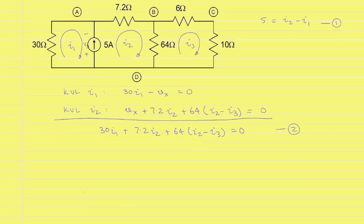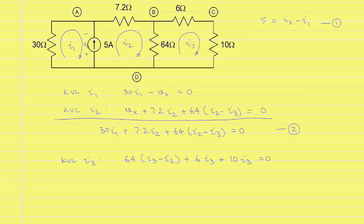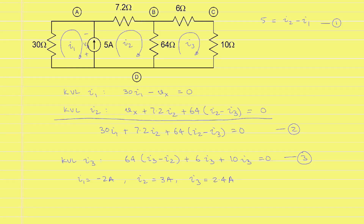This is the second equation that will be useful in mesh analysis. Writing KVL for the last mesh defined by the current I3, we will get a voltage drop of 64 multiplied by I3 minus I2 plus another voltage drop of 6 I3, and finally the last voltage drop of 10 I3 is equal to zero to satisfy KVL. This is the third equation. We have three equations and three unknowns. The solution will give us I1 is equal to minus 2 amperes, I2 is equal to 3 amperes, and I3 is equal to 2.4 amperes. We can calculate any other current or voltage in this circuit if needed.